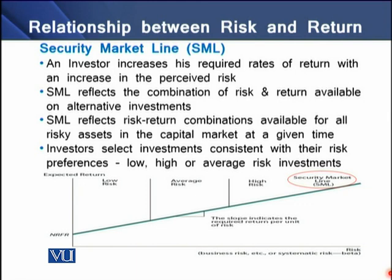The relationship between return and risk perceived by an investor can be reflected through a line known as the security market line. The security market line reflects the combination of risk and return available on investment alternatives for a particular investor. This SML reflects the risk-return combination available for all risky assets in the capital market at a given time. Investors select those investments consistent with their risk preferences, whether lower risk or higher risk investments.